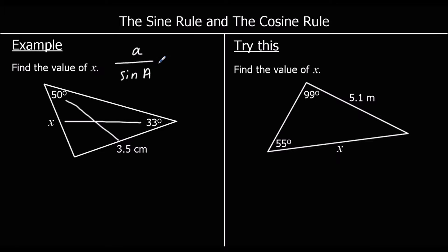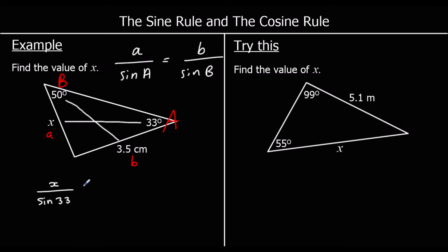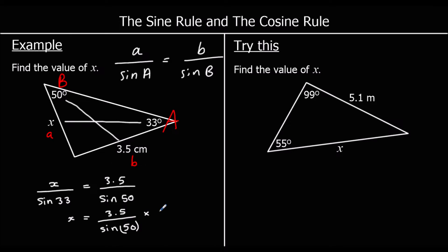So a over sine A equals b over sine B. So x can be little a — opposite that is big A. The other length is little b, opposite that is big B. The lengths are always the little ones, the angles are always the big ones, the ones that go with sine are always the angles. So substituting in, we have x over sine 33 equals 3.5 over sine 50. To get x by itself, we multiply both sides by sine 33. So x equals 3.5 over sine 50 times sine 33.